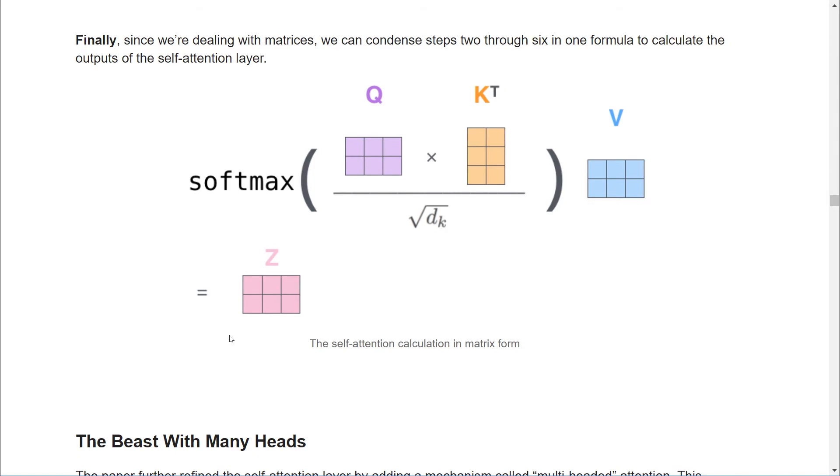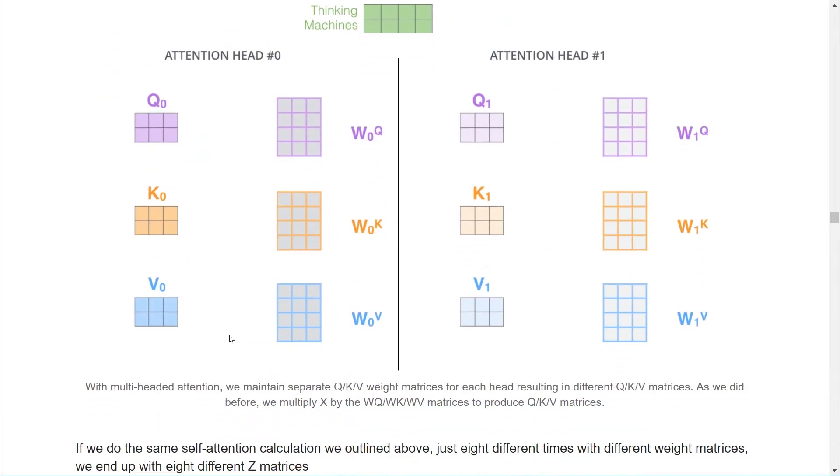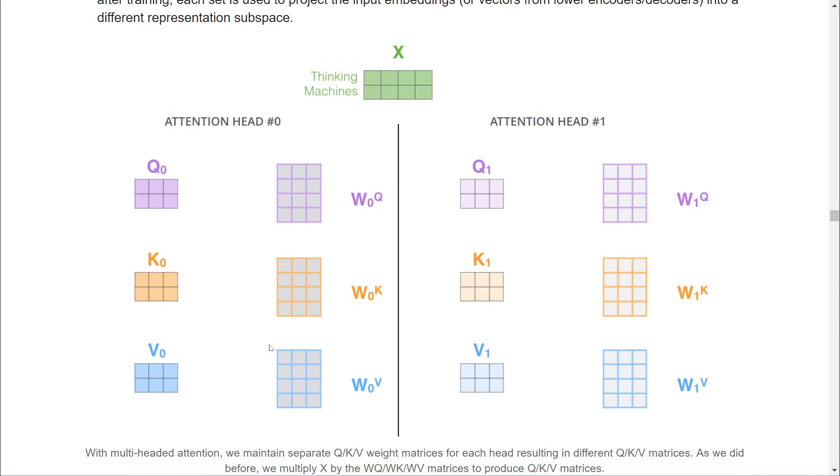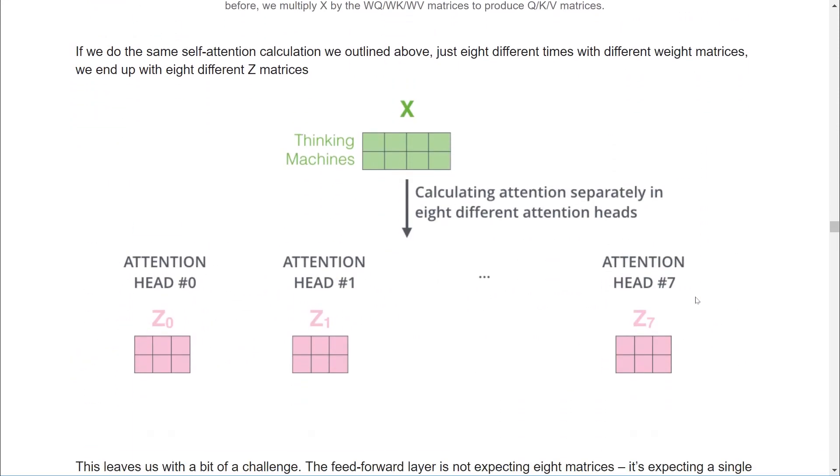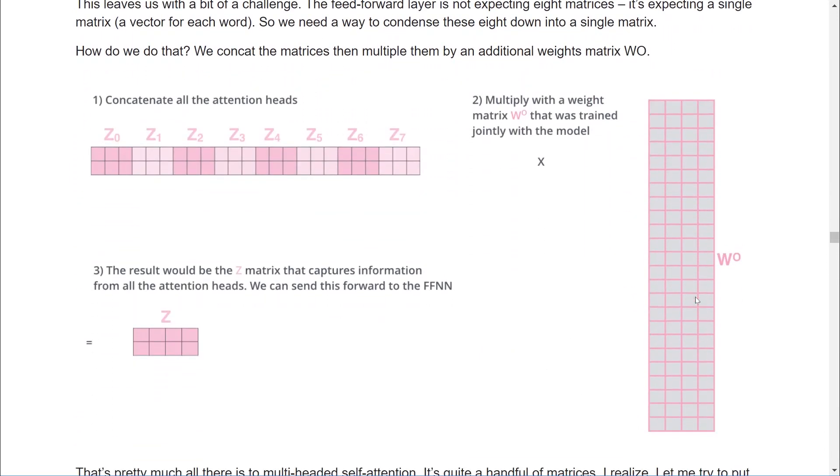The transformer paper further found that implementing multi-headed attention significantly improved results. How does it work? We do the calculations above 8 times in parallel using independently trained weights. Then we 1. Concatenate all the attention heads. 2. Multiply with a weight matrix that was trained jointly with the model. And 3. The result is a Z matrix that captures information from all the attention heads.